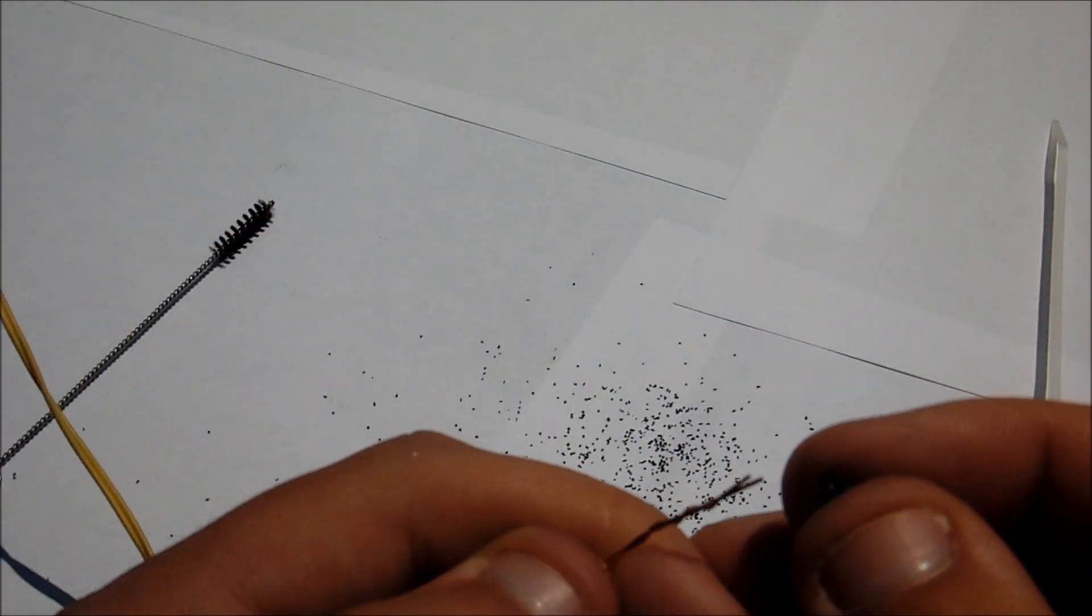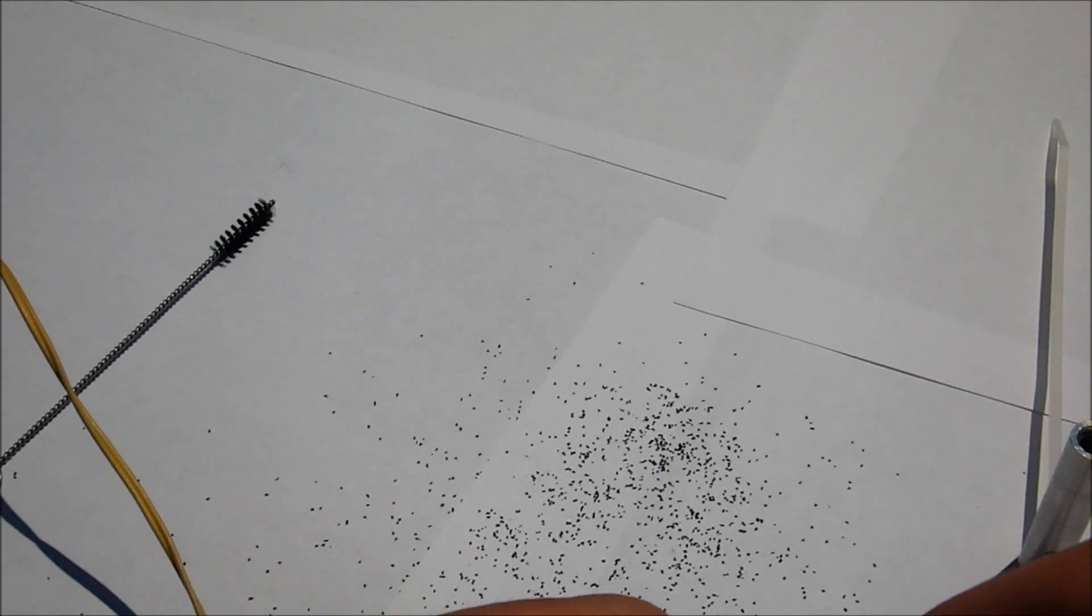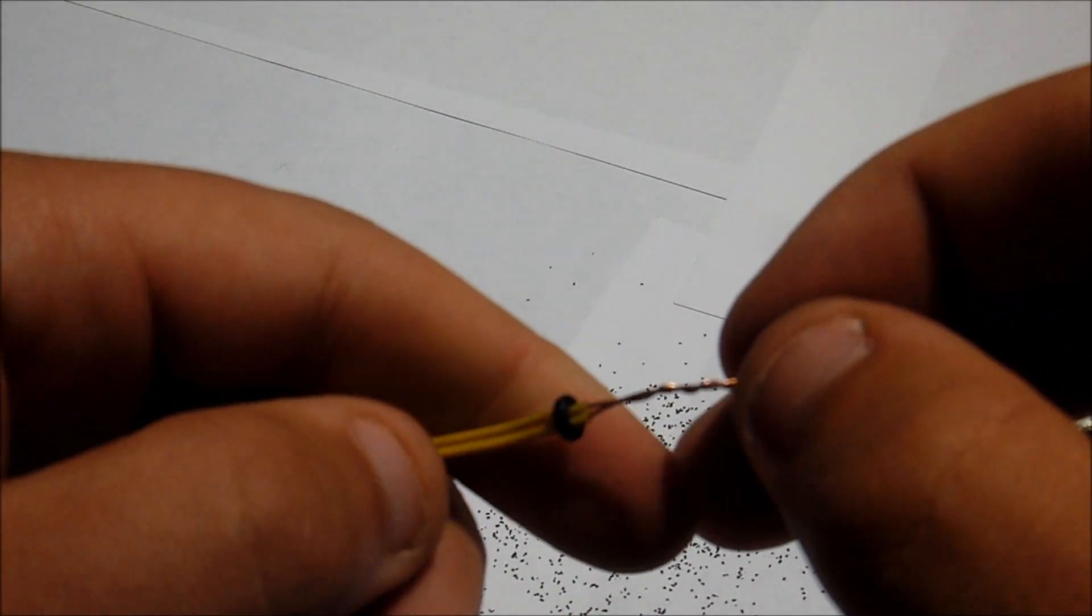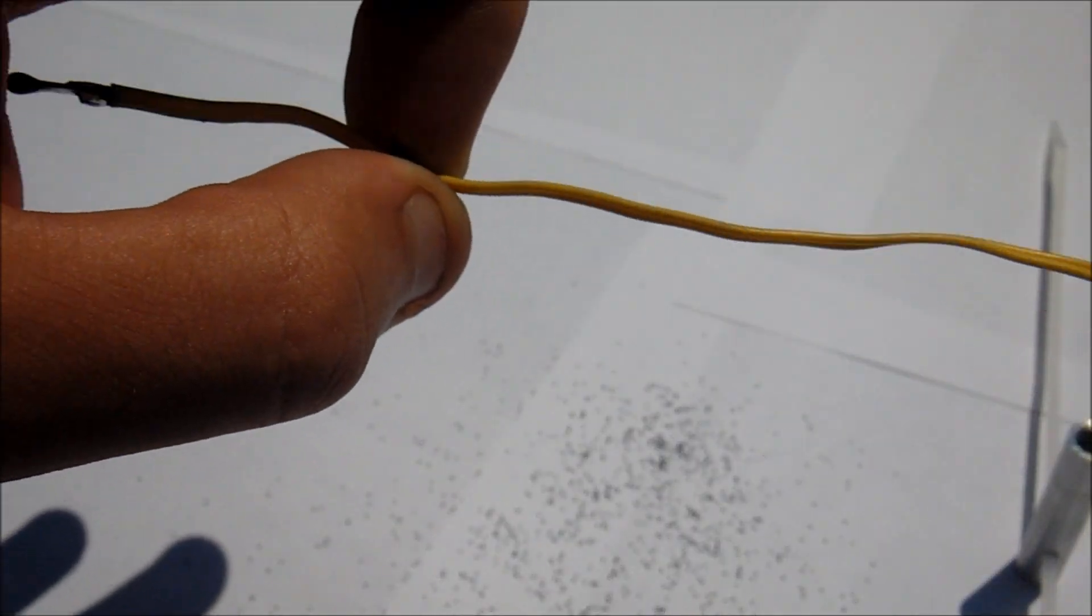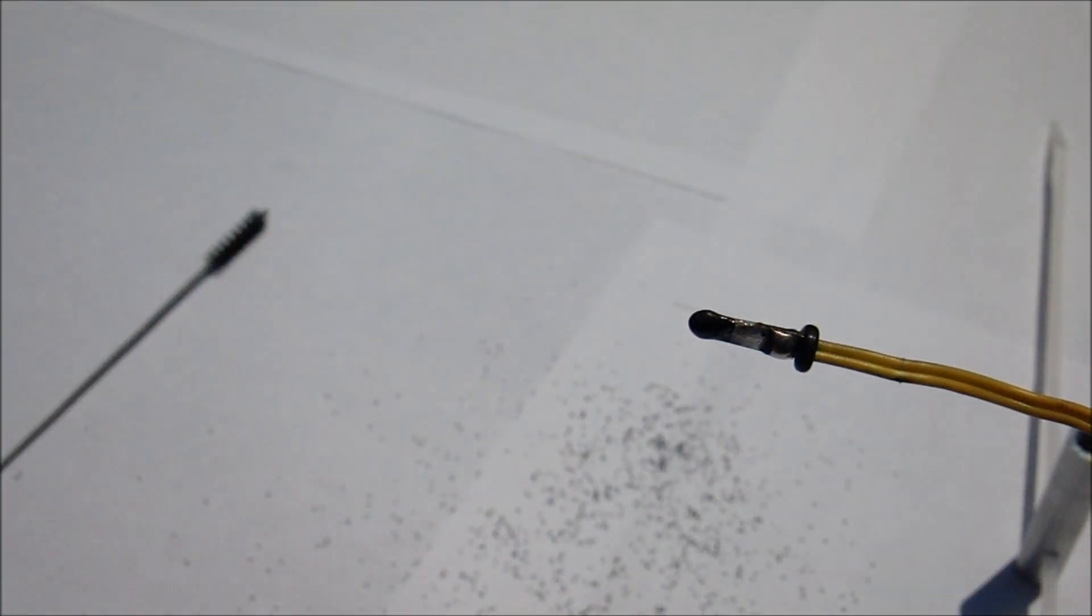put an o-ring over top of your wire along the back and then run it all the way up to the head of the e-match.